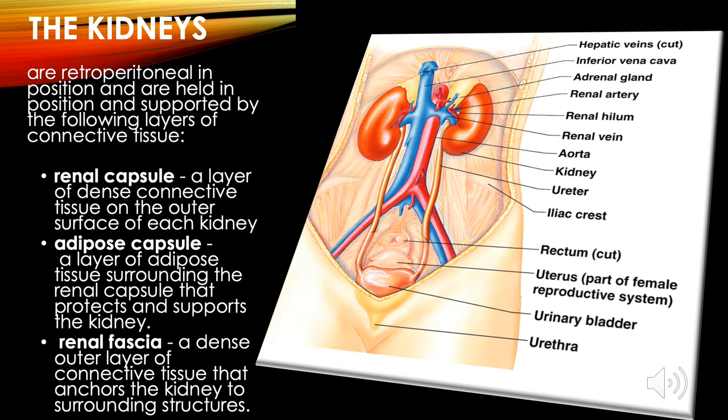The kidneys are retroperitoneal in position and held in place by layers of connective tissue: the renal capsule — a layer of dense connective tissue on the outer surface; the adipose capsule — a layer of adipose tissue surrounding the renal capsule that protects and supports the kidney; and the renal fascia — a dense outer layer of connective tissue that anchors the kidney to surrounding structures.